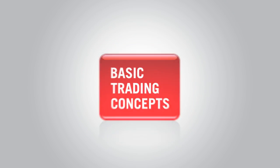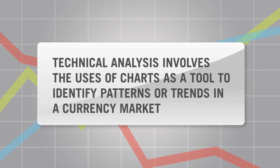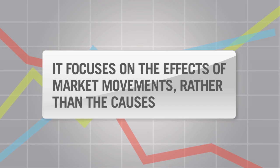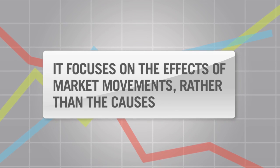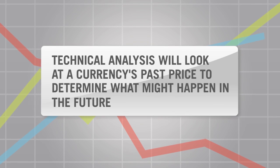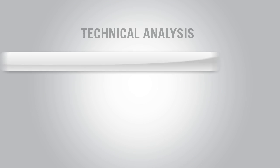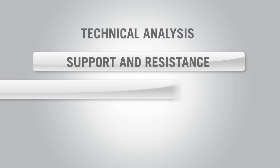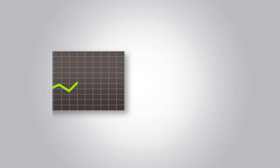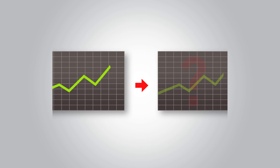Technical analysis involves the use of charts as a tool to identify patterns or trends in a currency market. It focuses on the effects of market movements rather than the causes. Technical analysis will look at a currency's past price to determine what might happen in the future. Some examples include support and resistance, Fibonacci retracements, or using various indicators in MetaTrader 4. It is more of a short-term mathematical approach, looking at what has happened in the past on charts to predict future price movements.